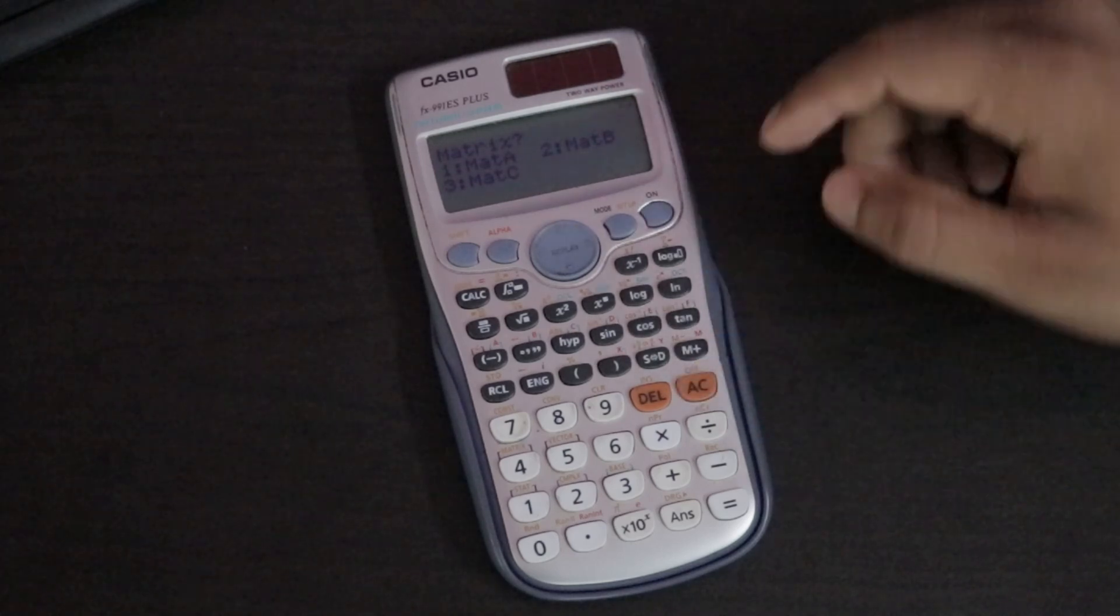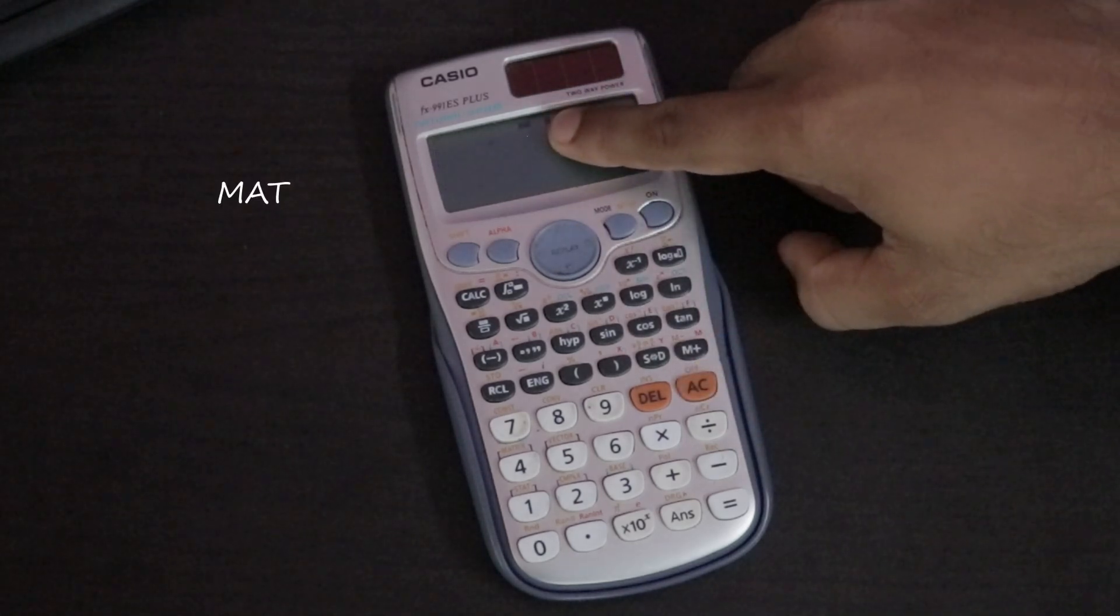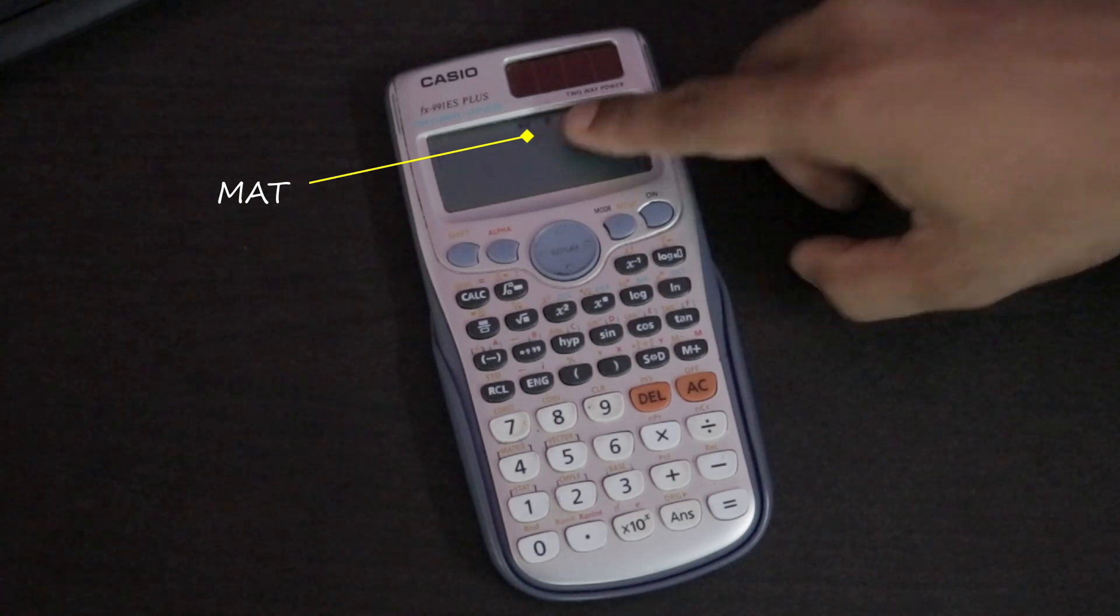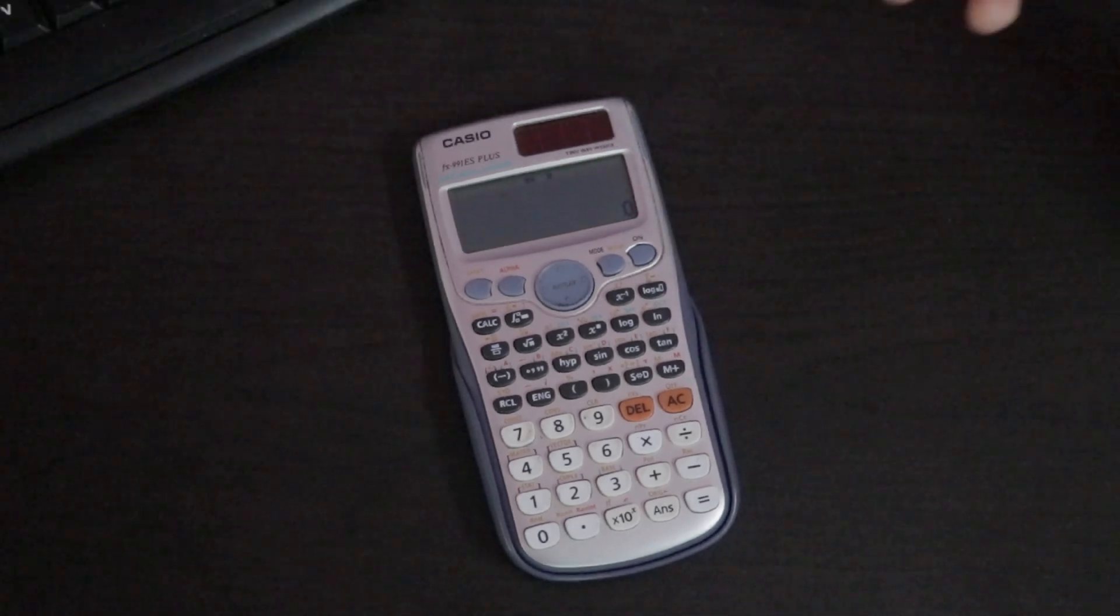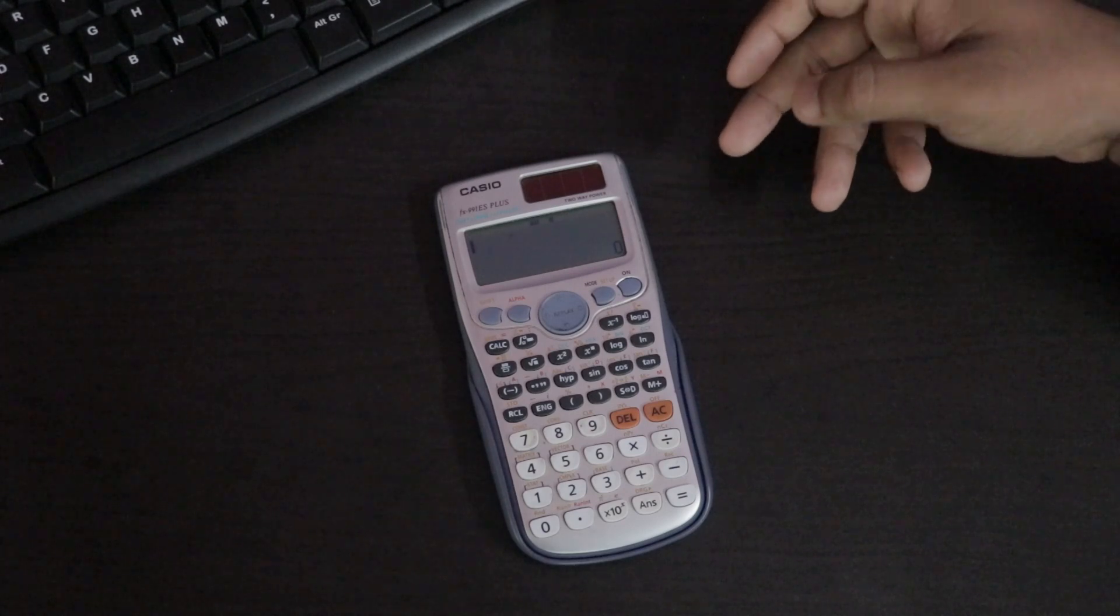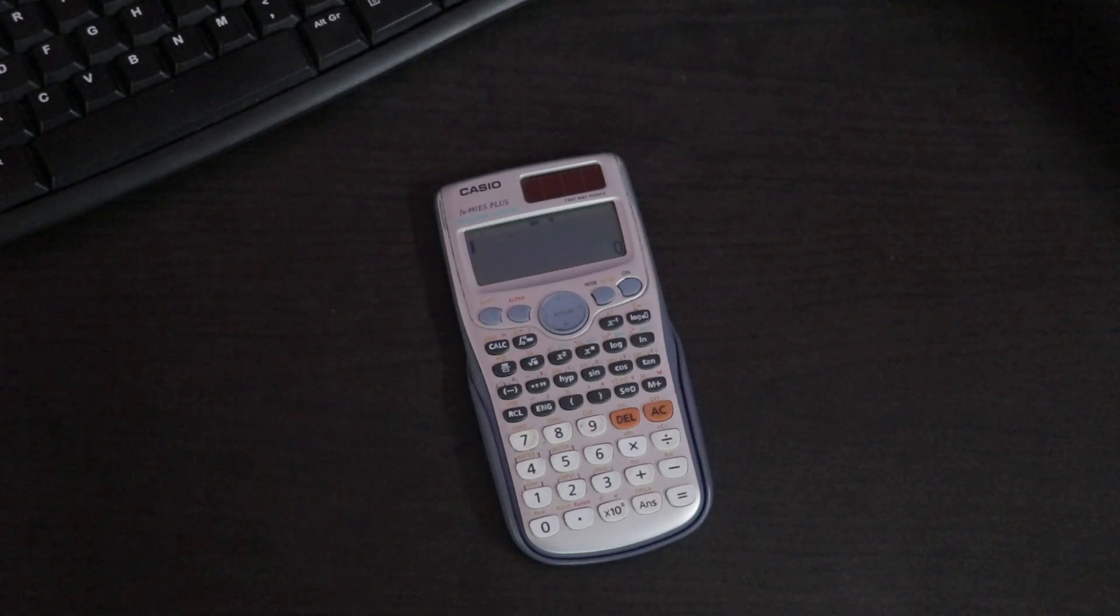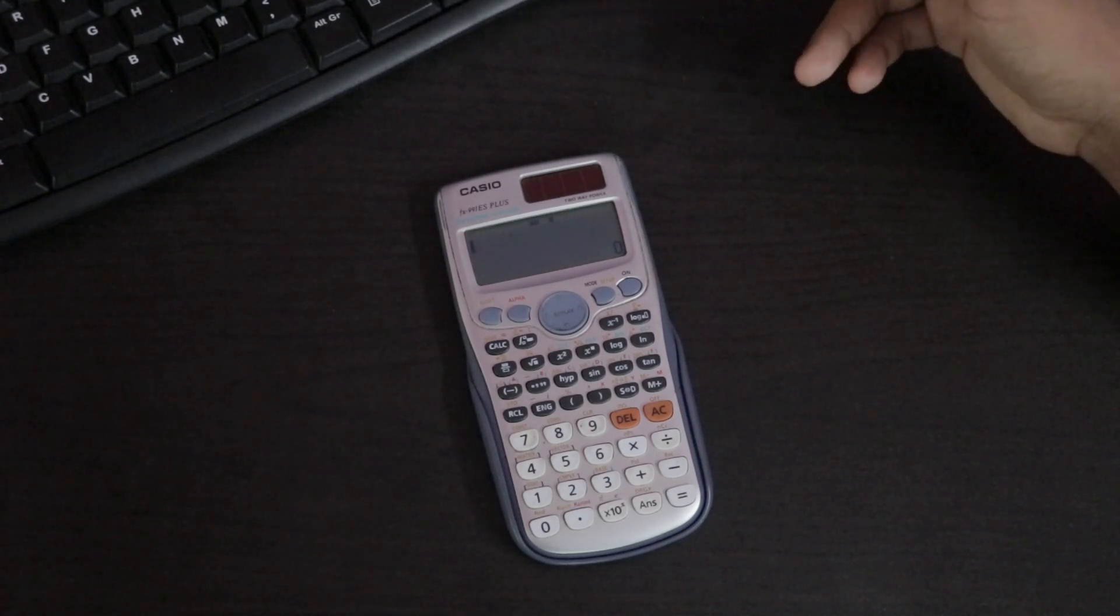Then click AC. As you can see here there is an option called MAT which stands for matrix. Now our calculator is in matrix mode. Next we have to store the elements of matrix A and matrix B separately into the calculator.